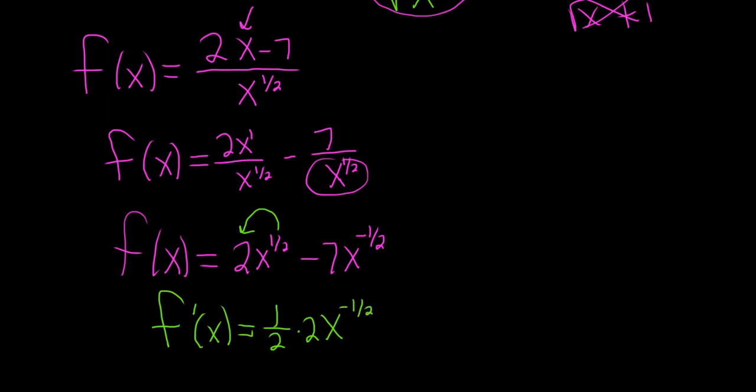And then here, negative 1/2 and negative 7 is going to give us positive 7/2, x to the, let's see, we have negative 1/2 minus 1. So that's negative 1/2 minus 2/2, which is negative 3/2.